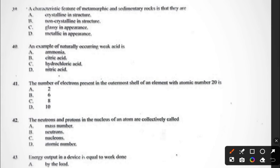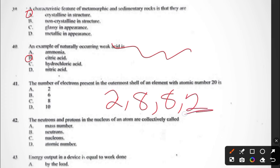Question thirty-nine: the characteristic feature of metamorphic and sedimentary rocks is that they are crystalline in nature, non-crystalline in nature, glassy in appearance, or metallic in appearance. The answer is A, crystalline in nature. Question forty: an example of a naturally occurring weak acid is ammonia, citric acid, hydrochloric acid, or nitric acid. The correct answer is B, citric acid. Question forty-one: the number of electrons present in the outermost shell of an element with atomic number 20 is 2, 8, 8, then 2. So the last shell takes 2, so question forty-one is A.